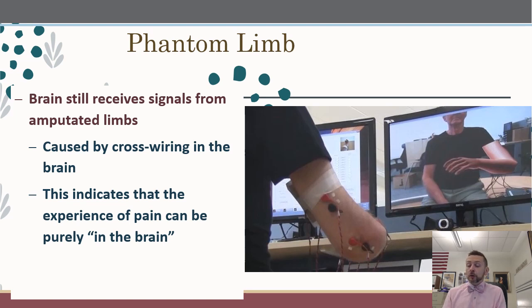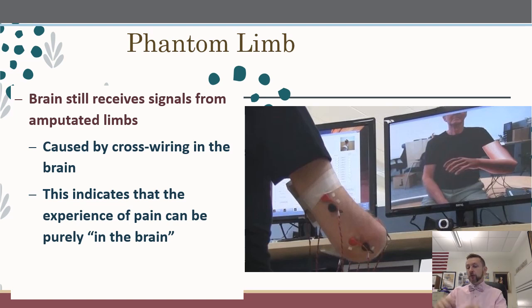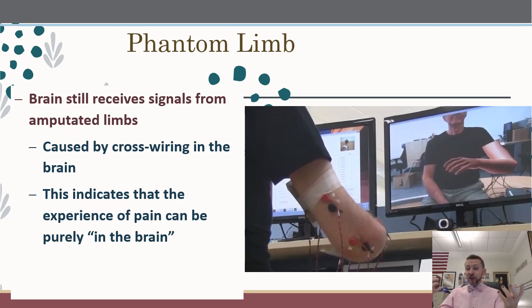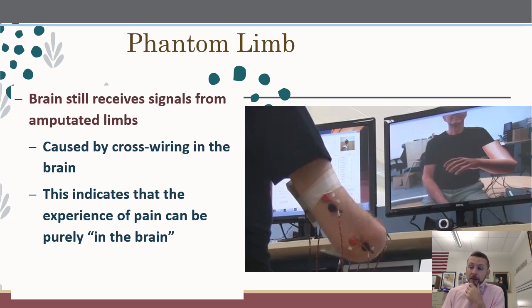How do you treat phantom limb? Virtual reality therapy. This person has an amputated limb, but the virtual reality therapy allows them to interact with a fake virtual limb. If your virtual limb itches, you can scratch it, and doing so causes the brain to respond. Over time, you can deal with the experience of pain or an itch in a phantom limb, and eventually it does help.